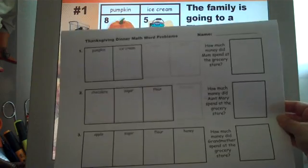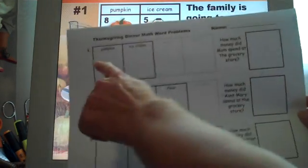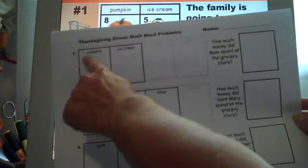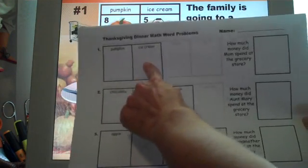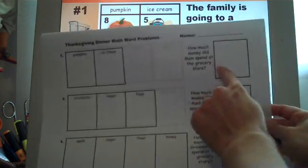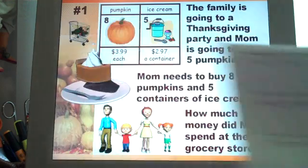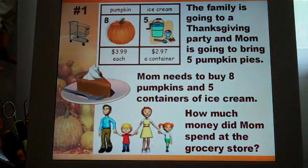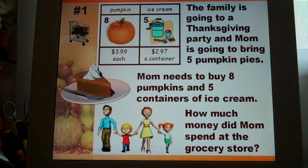I provide a worksheet that you can print out for your students. This is question number one. They're going to figure out how much the pumpkins cost, how much the ice cream costs, and then the total amount that mom spent at the grocery store.